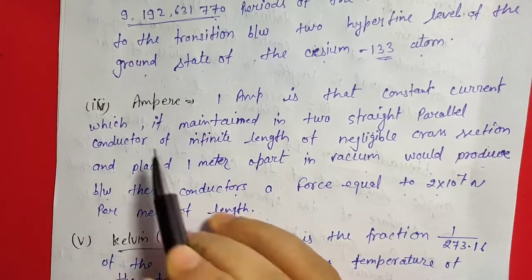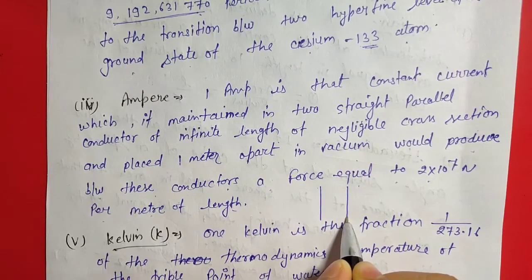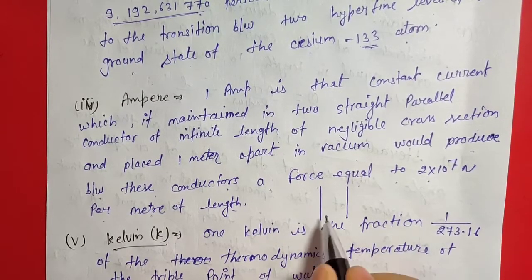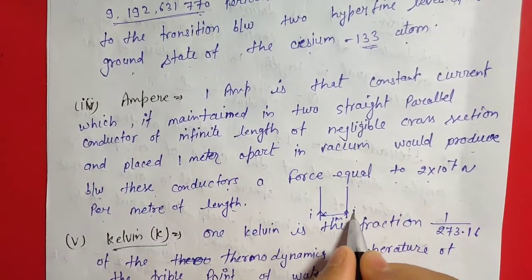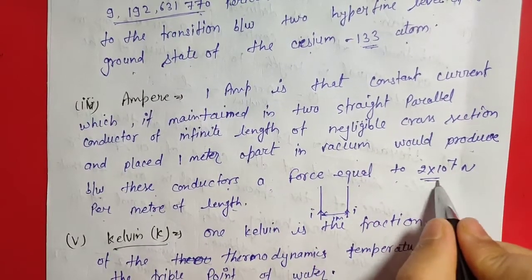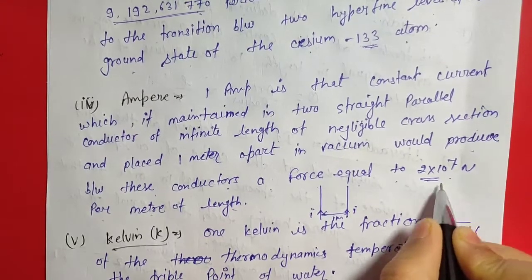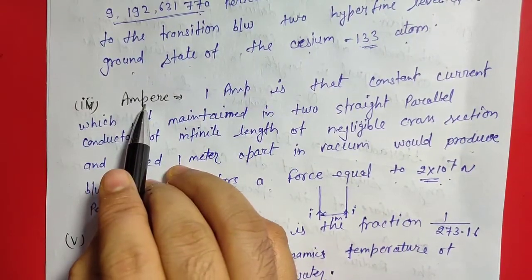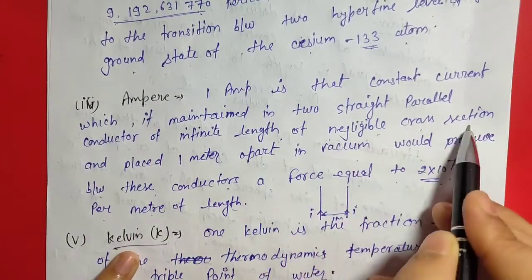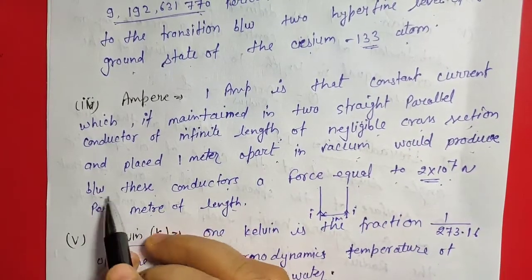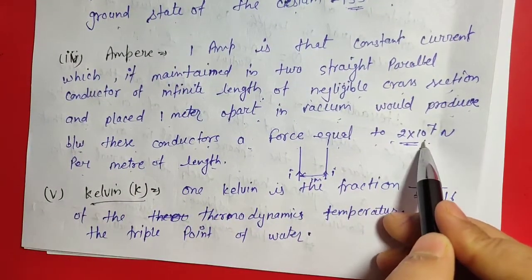If two infinitely long straight parallel conductors of negligible cross-section are placed one meter apart in vacuum, and a current is passed through them such that the force experienced between the conductors is 2×10⁻⁷ newton per meter of length, then the current flowing is defined as one ampere. That is 1A is that constant current which when maintained in two straight parallel conductors of infinite length placed 1 meter apart in vacuum produces a force equal to 2×10⁻⁷ newton per meter of length.